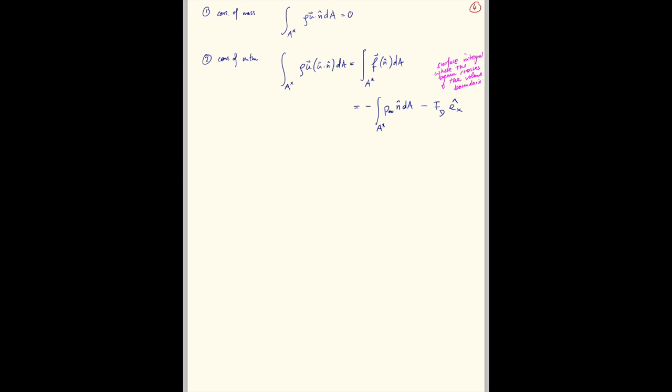So this is the surface integral where the beam crosses the volume boundaries. And that is the two planes that I haven't drawn, right? That's the xy plane parallel to the page. And when the bar crosses that, that's where you pick up that fd contribution.